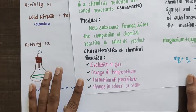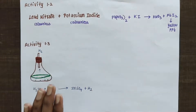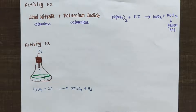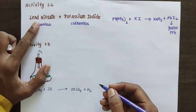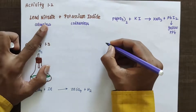Got it, friends? Now, if they ask you to write the equation for this, you have to note it. When you add lead nitrate and potassium iodide together, you get the products.